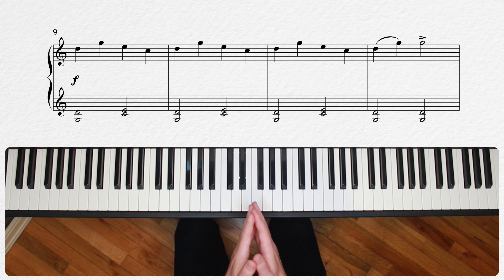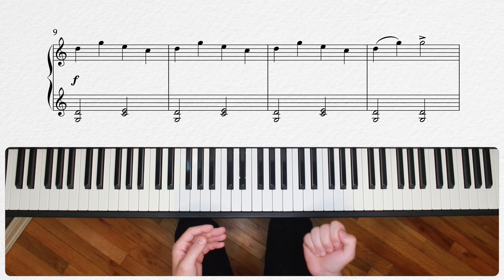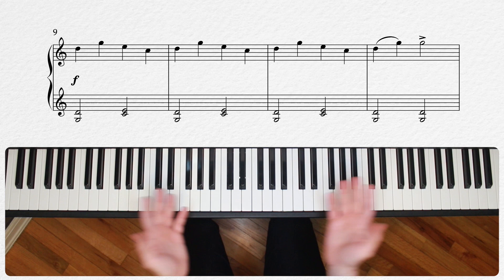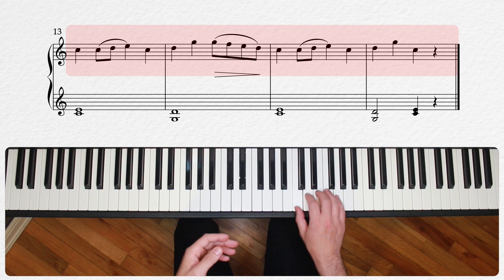And in that B section, we have further benefits of repetition. Notice that for the first full three measures, we have one thing we're playing in the right hand. This straight quarter notes figure on 2-5-3-1. Super easy and not even anything rhythmic to get in your way there. And then for the end, we just repeat measures five through eight in measures 13 through 16.